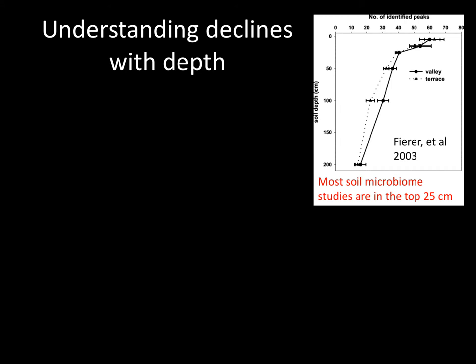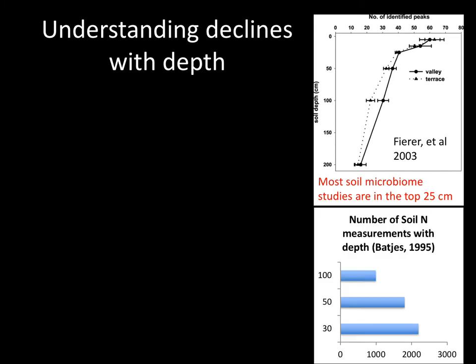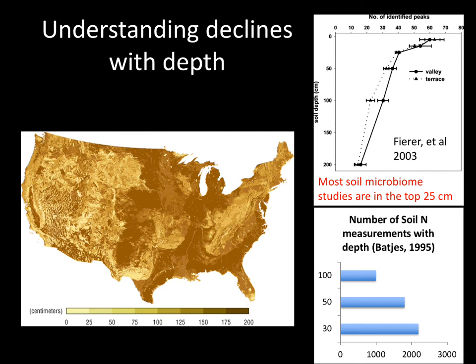In fact, if we pick any system associated with soil, our understanding and observations decrease with depth — whether we're thinking about the microbiome, soil nitrogen storage, measurements, or even something as basic as mapped soil depth across the United States, one of the best-observed places in the world.